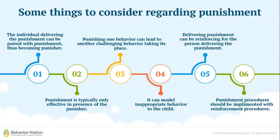Fourth, punishment can model the inappropriate behavior for your child — a child that sees another individual engaging in a punishment procedure may model that behavior later on. Fifth, delivering a punishment procedure can also be reinforcing for the person delivering it, because the challenging behavior likely stops, which may lead to increased use of punishment procedures in the future. Finally, punishment procedures should always be paired with a reinforcement procedure. If you are going to teach your child what not to do, you need to teach them what to do instead — always have a reinforcement procedure in place for the replacement behavior.